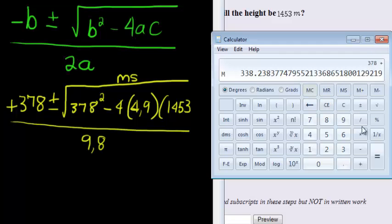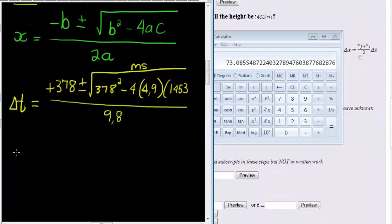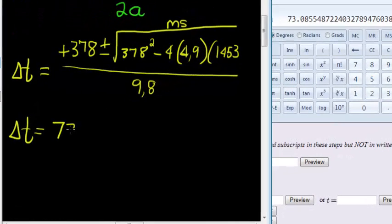and when I press equal, I now get the answer for 378 plus the memory that I stored. Divide this answer now with 9.8, 9.8, and I get the answer of 73.0, and that will be 9. So my one delta t will be equal to 73.09.